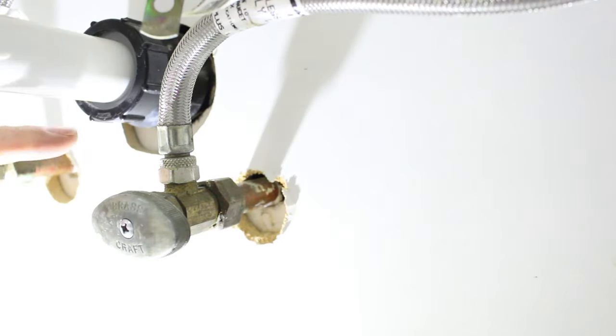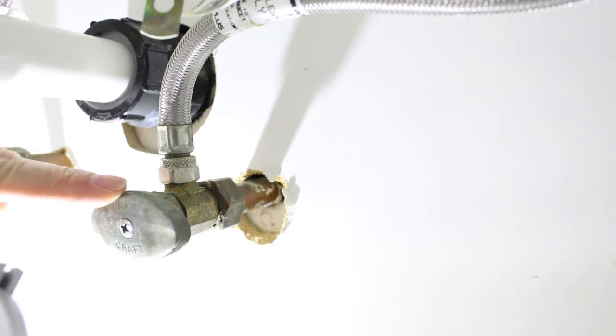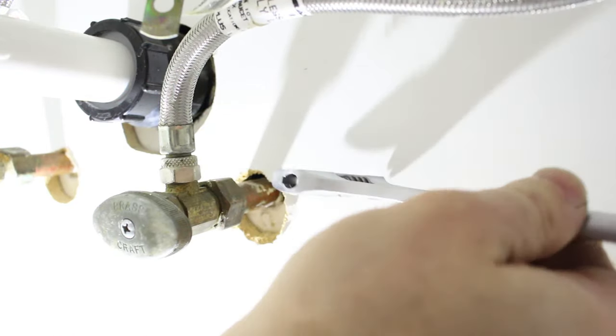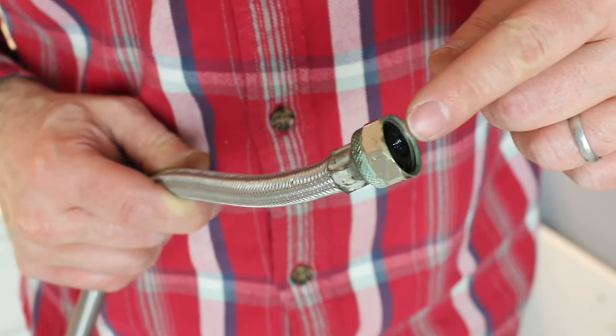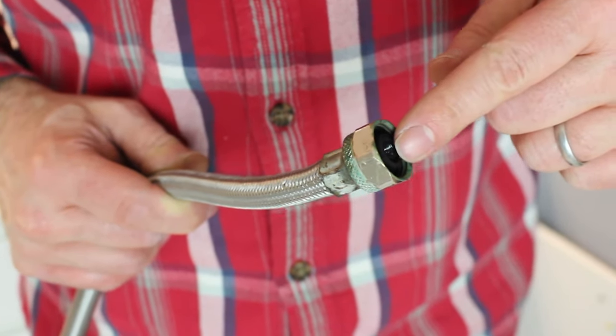So again, just use a crescent wrench to loosen this nut that's connected to the shutoff valve. Any time you see rust or corrosion on these supply lines, that's a sure sign that you should replace these.